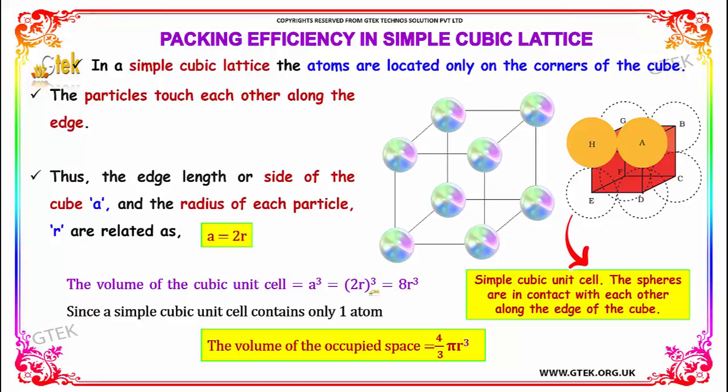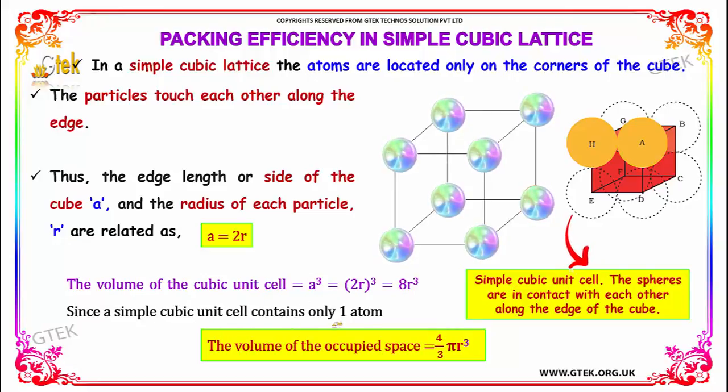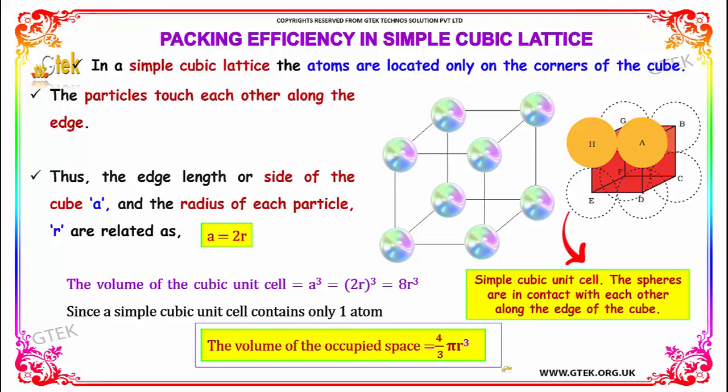A simple cubic unit cell contains only one atom. So the volume of the occupied space is (4/3)πR³.